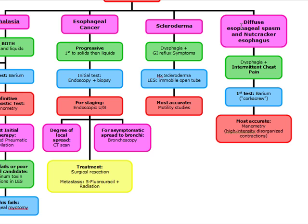Our last topic is diffuse esophageal spasm, also known as nutcracker esophagus. The patient is going to come in with severe but intermittent chest pain with dysphagia. These patients are going to have a lack of risk factors pointing toward ischemic heart disease, but it's going to look like ischemic heart disease. A common precipitant is getting these symptoms after drinking a cold beverage. Our first test is barium, since it's an esophageal disorder. The most accurate test is manometry, which will show high-intensity disorganized contractions.